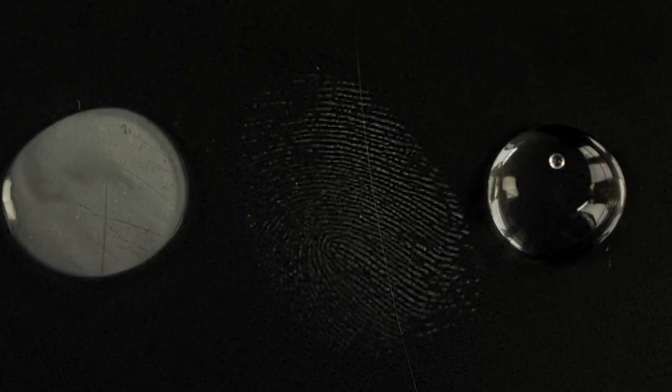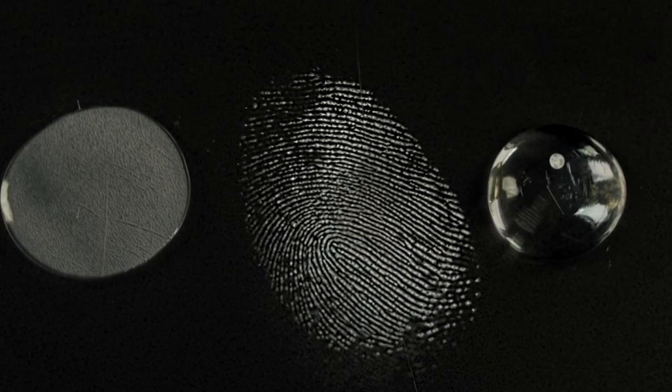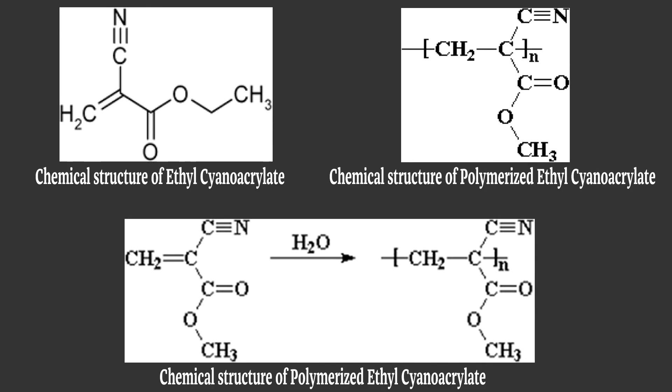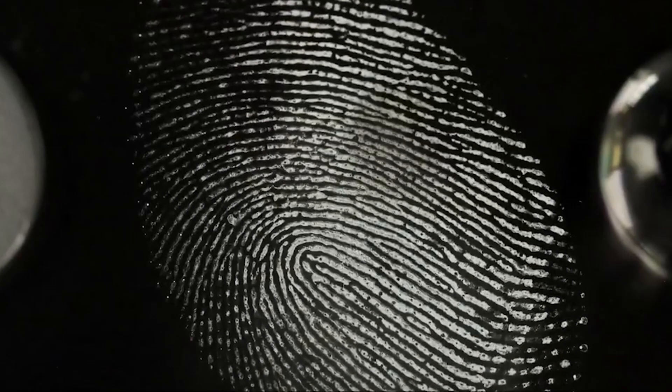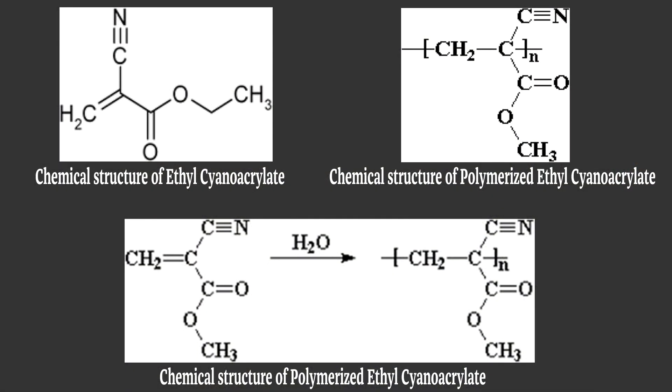It forms vapors when heated in a sealed chamber which interacts with certain acrylic components of latent finger mark residues. The acrylate vapors get polymerized onto the deposited proteins of the latent fingerprint and form into white stable and clear print outlines. This hard white polymer is known as polycyanoacrylate.